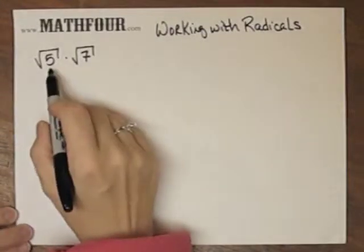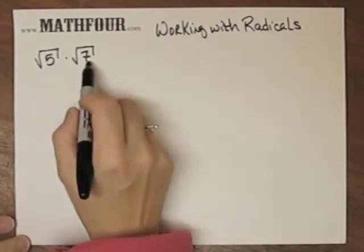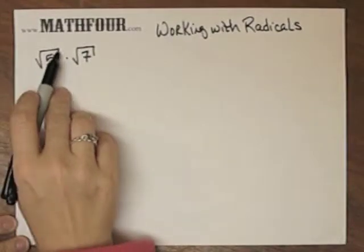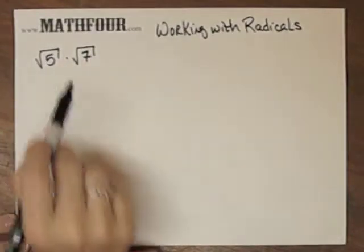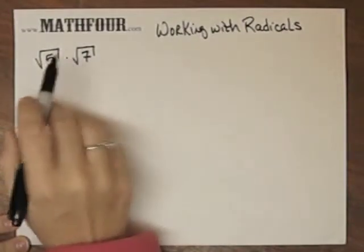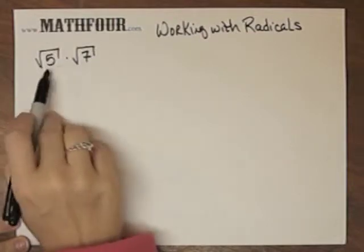I'm talking about working with radical symbols which means like square roots, cube roots, fourth roots, etc. Here we're using the square root. They're both the square root.